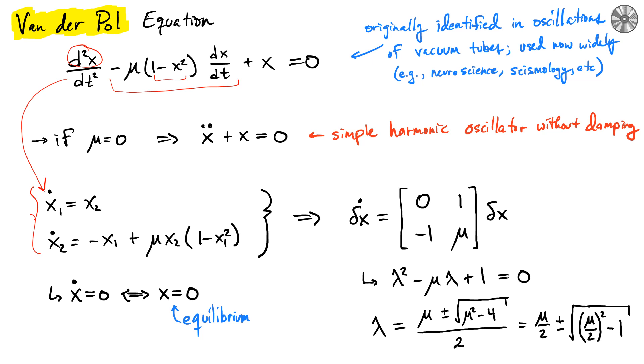What we're interested in doing is quantifying what the equilibria are of this system. Go ahead and pause the video to convince yourself that the only place for x dot to be zero is just when x is equal to zero, so x₁ and x₂ are both zero.